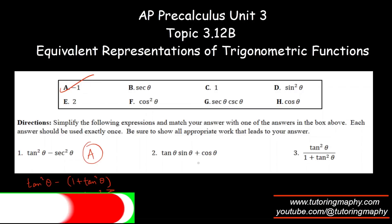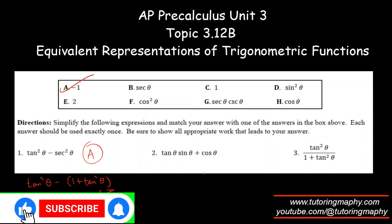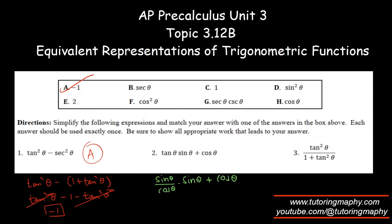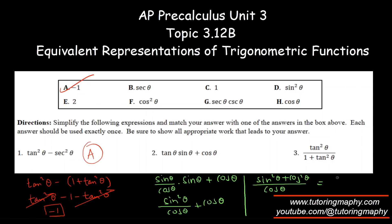The next one is tanθ·sinθ + cosθ. I'll replace tanθ with sinθ/cosθ, giving sin²θ/cosθ plus cosθ. Taking the common denominator cosθ, the numerator becomes sin²θ + cos²θ, which equals 1. So we have 1/cosθ, which is secθ — that's option B.